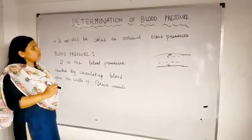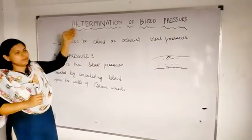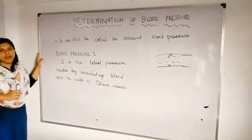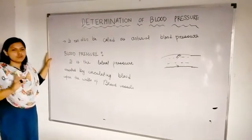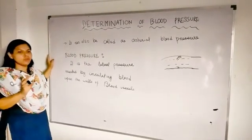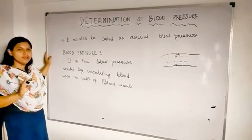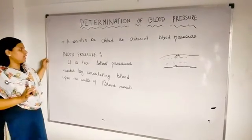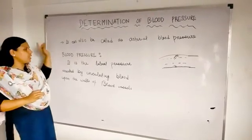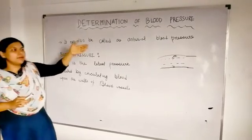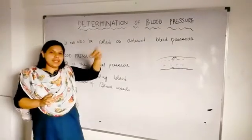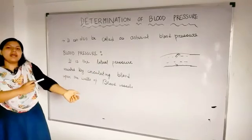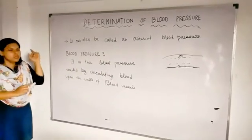Good morning, morning all. Today our topic is determination of blood pressure. As you can see, this is one of the most important topics in our human anatomy and physiology practical. It can also be called as arterial blood pressure, as it is determined in the brachial artery of our left arm.